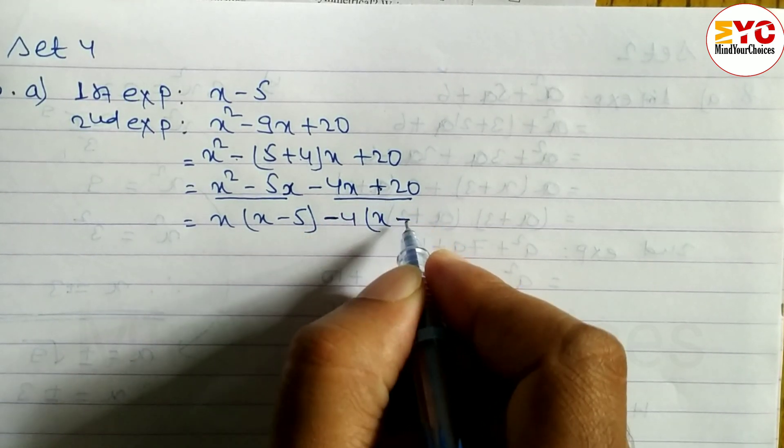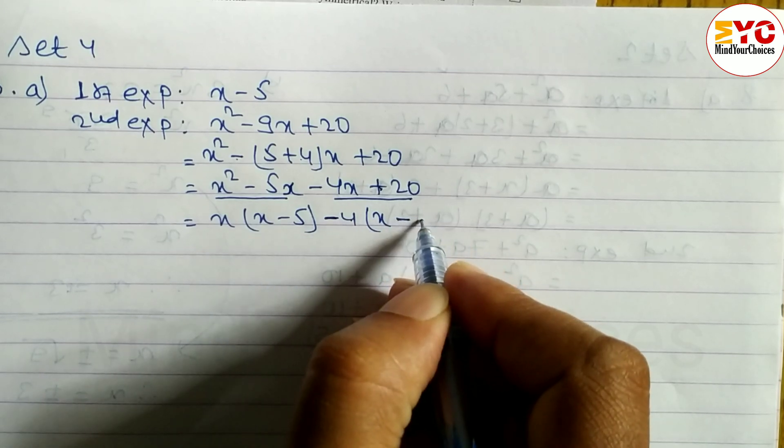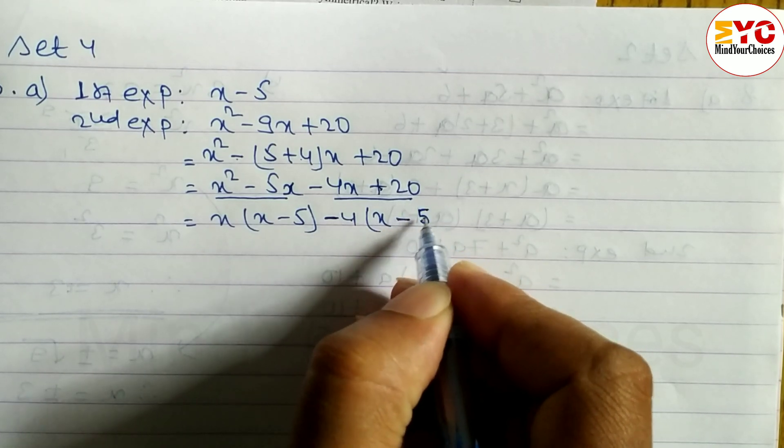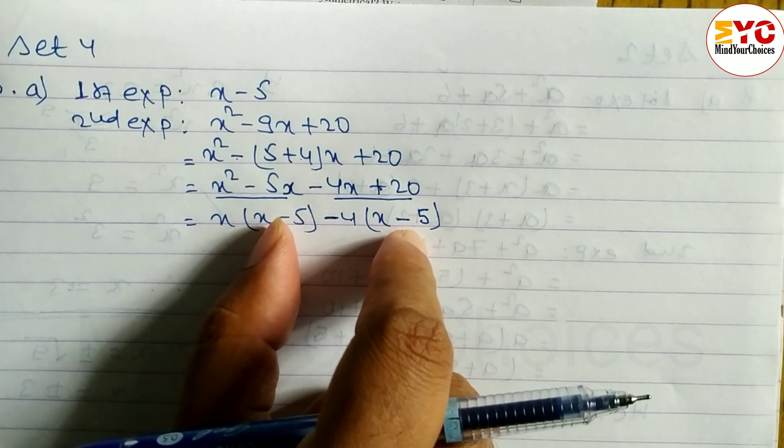Now, when we take minus common, we have to change the sign. Plus becomes minus, minus becomes plus. 4 multiplied by what number gives 20? 4, 5 gives 20. You can see here x-5, x-5 here.